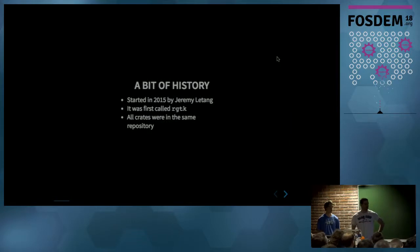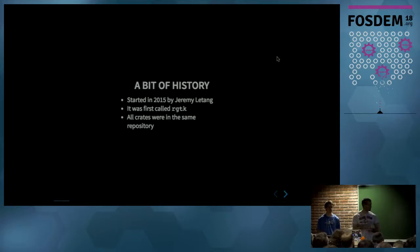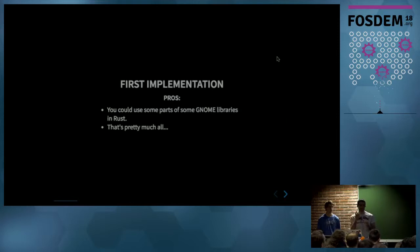A bit of history. At first, it was started by Dremery Letang in 2015, when we were both still at school. We started it to learn Rust. It was called GTK and we had sub-crates for each GNOME library like GIO, GLib, and so on, all in the same repository. The first implementation was very simple — a one-to-one binding, so you had a function, an object, it was the same in Rust. Not much advantage, but you could use GTK in Rust.